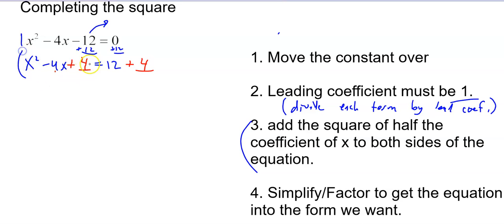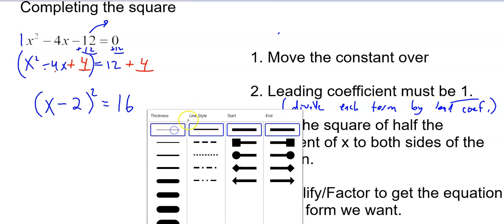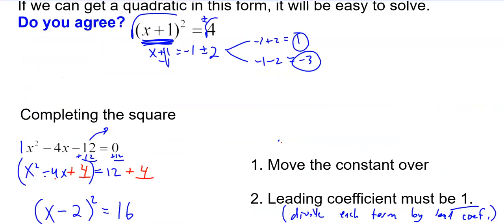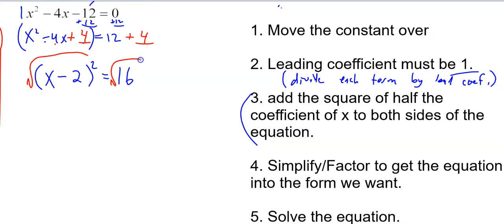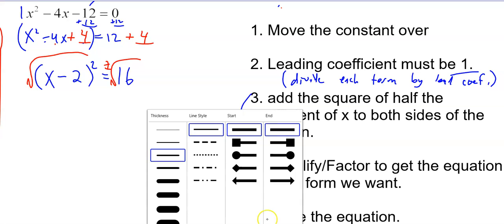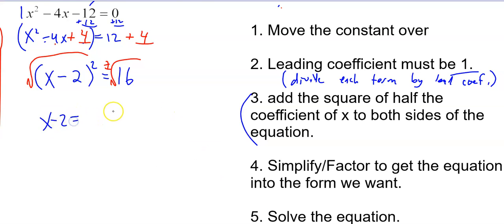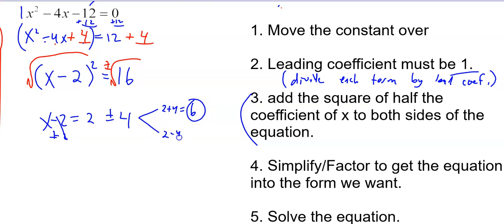Simplifying and factoring: the left-hand side should be a perfect square. Since there's a minus sign, it's going to be (x minus 2) squared, and 12 plus 4 is 16. At this point you're really done with complete the square, essentially. Take the square root of both sides: x minus 2 equals plus or minus 4. Add 2 to both sides: we get x equals 2 plus 4, which is 6, and 2 minus 4, which is negative 2. So we get two answers.